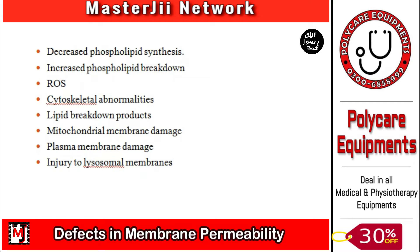The most important type of membrane damage is mitochondrial membrane damage. Whenever there is mitochondrial membrane damage, ATP production decreases.